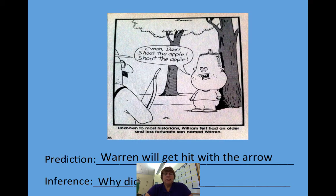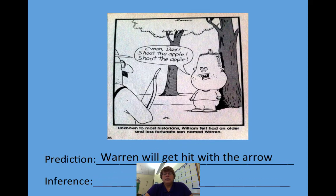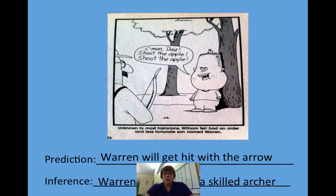Next we have to ask why — why do we think Warren is going to get hit with the arrow? Because of the caption underneath the cartoon, I'm going to say the reason Warren is getting hit with the arrow is because Warren's dad is not a very skilled archer.